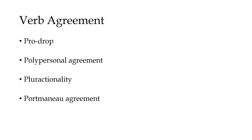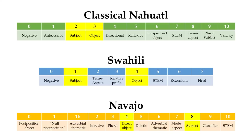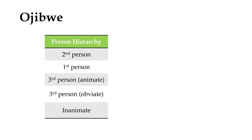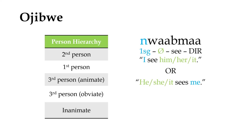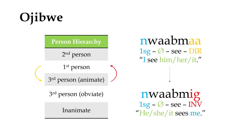For one final variation on polypersonalism, let's talk about direct-inverse systems. In these systems, the position of the subject and object markers don't conform to any predetermined order in the verb template, but instead according to what's called a person hierarchy, which in all attested cases has either the first or second person at the top, then the third person below those, and then any other persons the language might distinguish — such as inanimate or obviative third person — at the very bottom. Each person included in the hierarchy will have an invariable slot in the verb template regardless of role, so the identity of the subject and object can't be inferred from person marking alone. Instead, the default assumption is that the argument higher on the hierarchy is doing something to the argument lower on the hierarchy, and if this isn't the case, a special inverse marker is added to the verb to signal that the expected roles have been reversed.